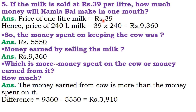The price of one liter of milk is Rs. 39. Hence, the price of 240 liters of milk is Rs. 39 × 240 = Rs. 9,360. The money spent on keeping the cow was Rs. 5,550 and money earned by selling the milk is Rs. 9,360. The money earned from the cow is more than the money spent on it. Difference: Rs. 9,360 minus Rs. 5,550 = Rs. 3,810. This much profit Kamla Bai is earning per month.